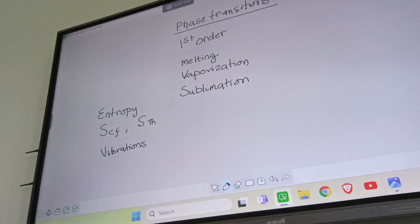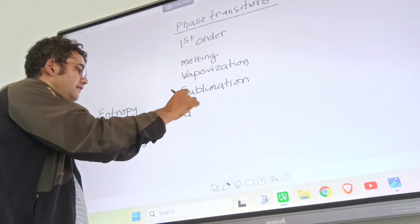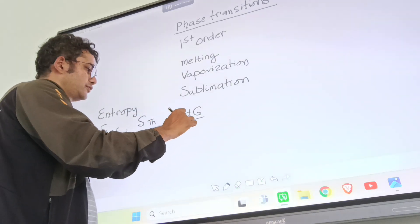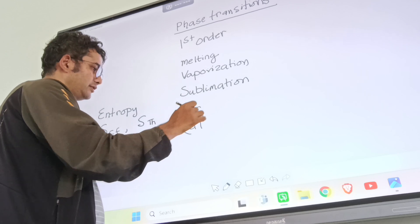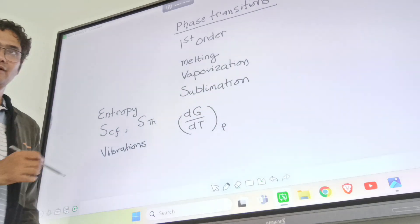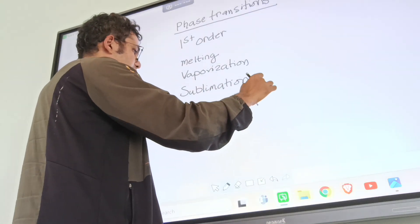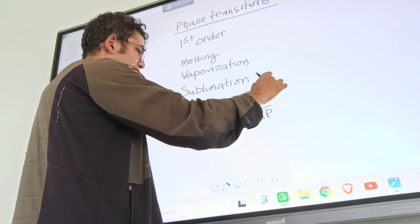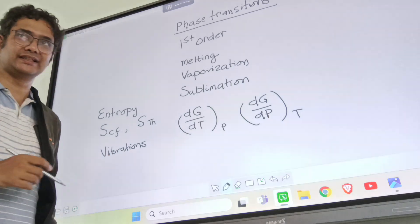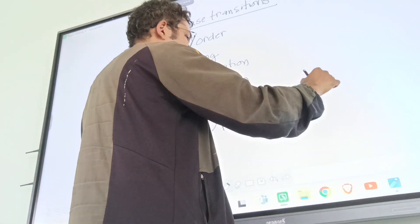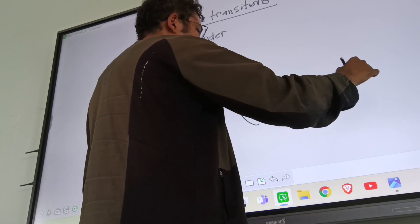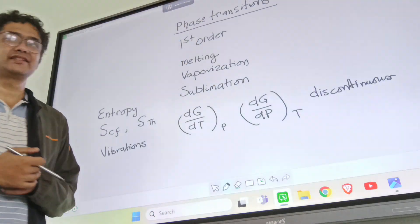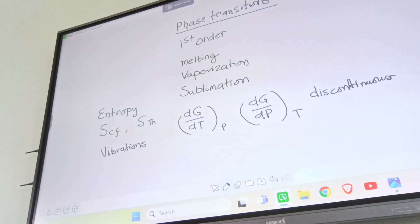In first-order phase transitions, the derivatives of free energy with respect to temperature at constant pressure, or with respect to pressure at constant temperature, they are discontinuous. So what actually does it mean?